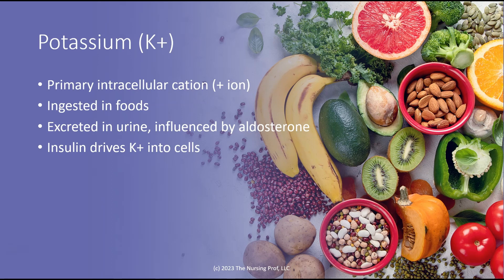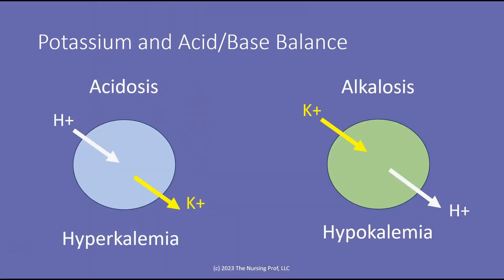Another factor involved in moving potassium around is our acid-base balance. Because potassium is the major intracellular cation, when other positive ions enter the cell — as happens in acidosis — potassium has to leave the cell, otherwise there's too much positive charge. In alkalosis, hydrogen ions are leaving the cell, and therefore potassium rushes into the cell. So these are the changes that occur in our potassium distribution when we have acidosis or alkalosis.